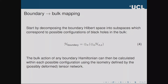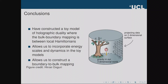We're also able to construct a mapping from the boundary to the bulk. Throughout this talk I've spoken of ADS/CFT as a map from bulk to boundary, but it goes in both directions, and the boundary-to-bulk direction is in many ways more interesting. We construct this map by decomposing the boundary Hilbert space into subspaces corresponding to different configurations of black holes in the bulk. To conclude: we've constructed a toy model of holographic duality where the bulk-boundary mapping is between local Hamiltonians, incorporating energy scales and time dynamics, and enabling a boundary-to-bulk map — a new direction for these toy models.